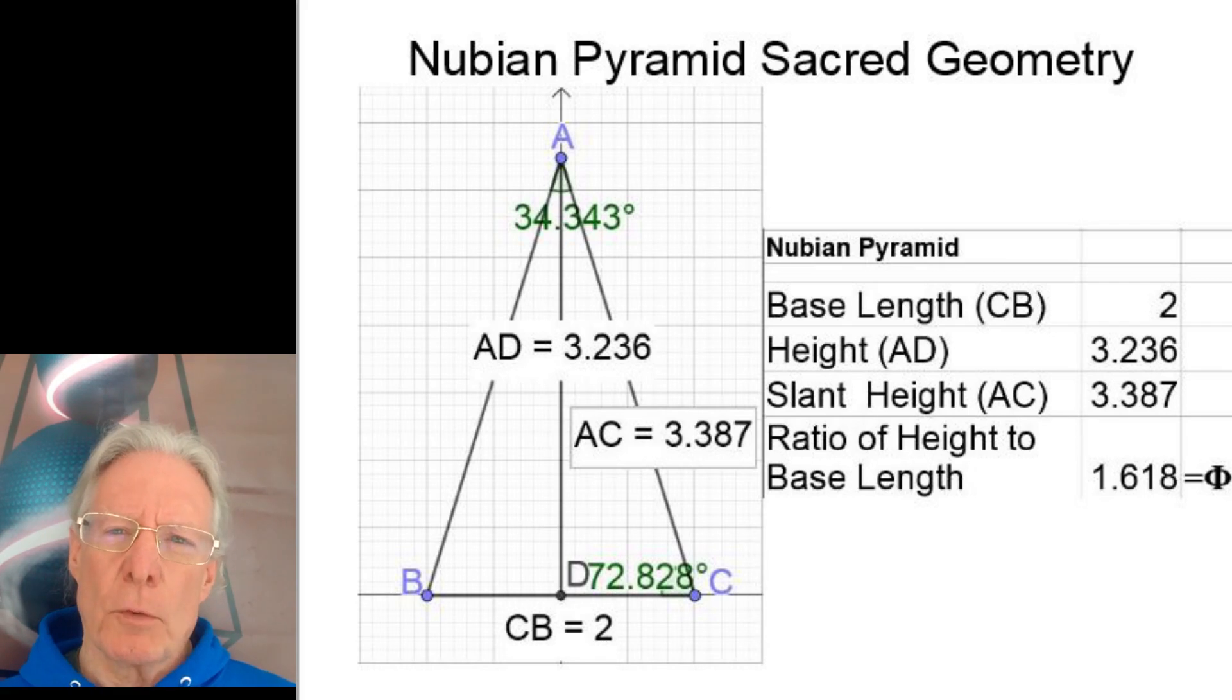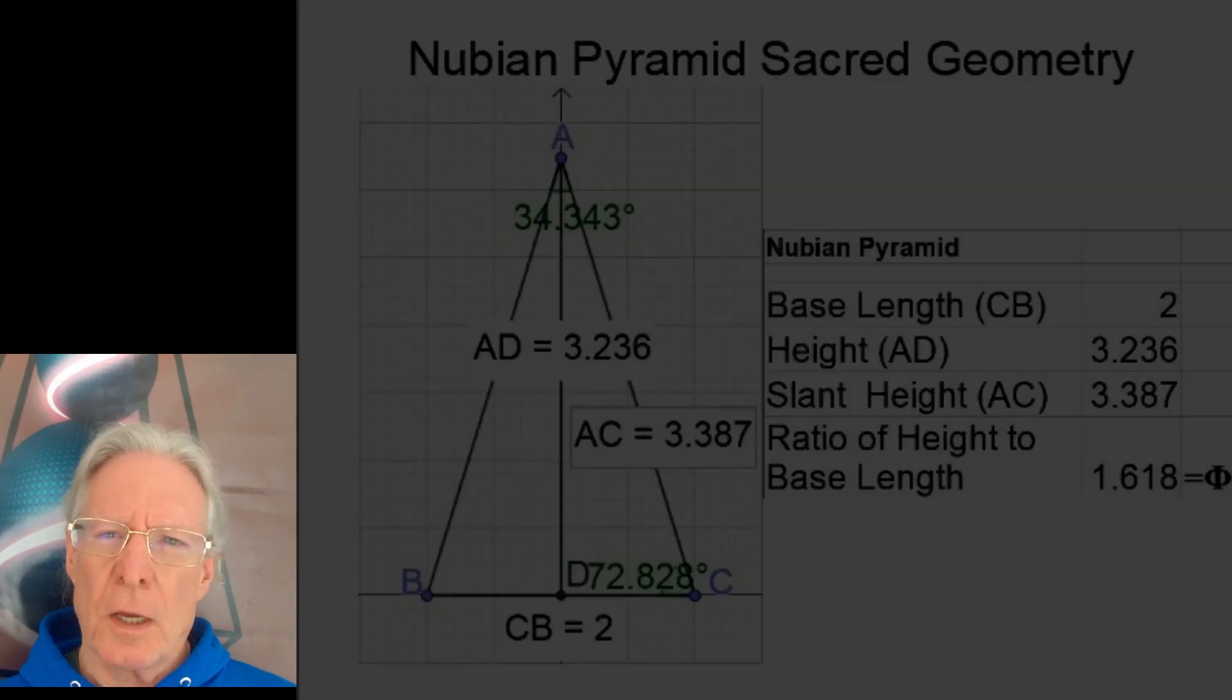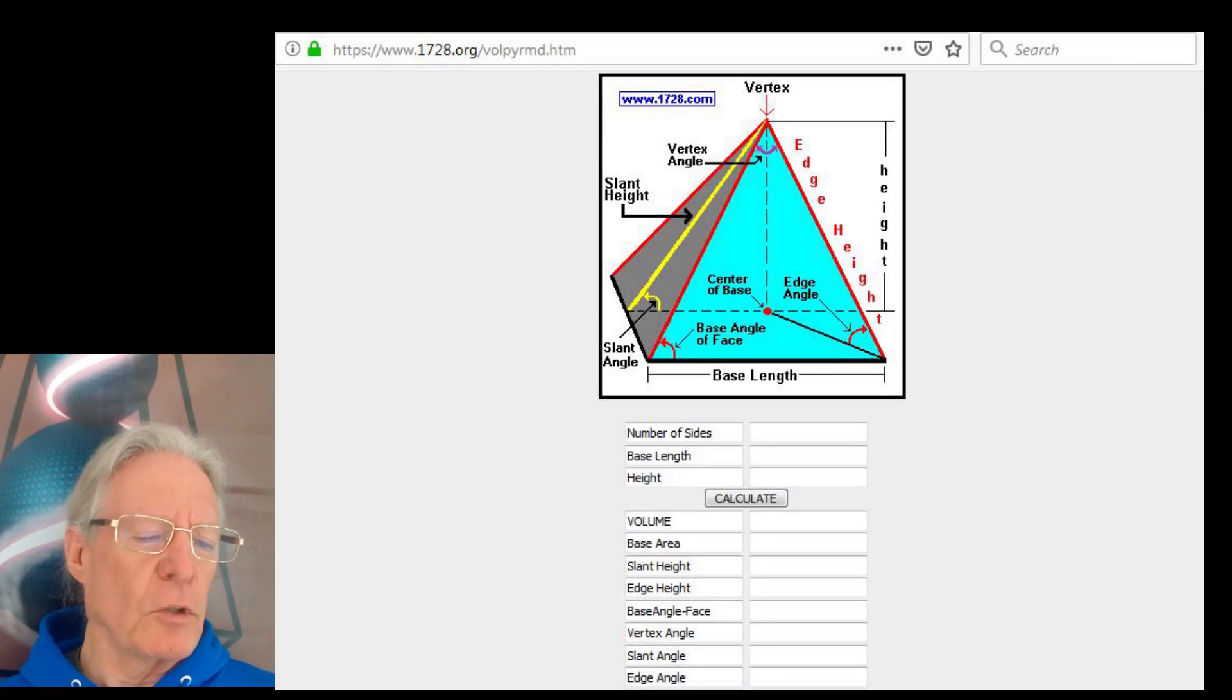Now we're going to take that two-dimensional information and expand it to three dimensions. So this is 1728.org/volpyramid.htm shown at the top of this page. Now we see that in this case we're calling the top of the pyramid the vertex. We're going to see the slant height that we talked about in two dimensions running down the middle of the side of the pyramid, and we're going to see the slant angle that we were talking about. Again, in the middle of the pyramid is where that is calculated. But now we've expanded the geometry of the pyramid into three dimensions, so we have different angles and different heights that deal with the edges of the pyramids in three dimensions.